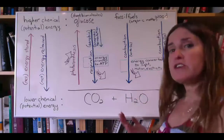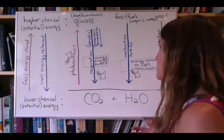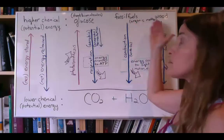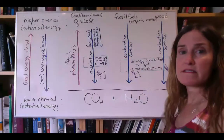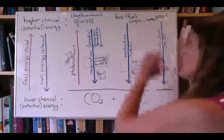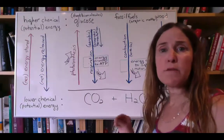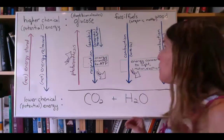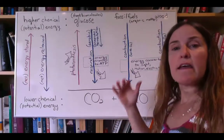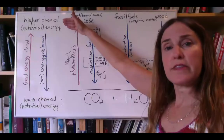If you think about the energy that we use in our lives, much of it is in the form of energy sources—currently fossil fuels or biomass, such as wood. These substances contain what we call chemical potential energy, meaning they are made of molecules that have a high level of chemical potential energy in them.